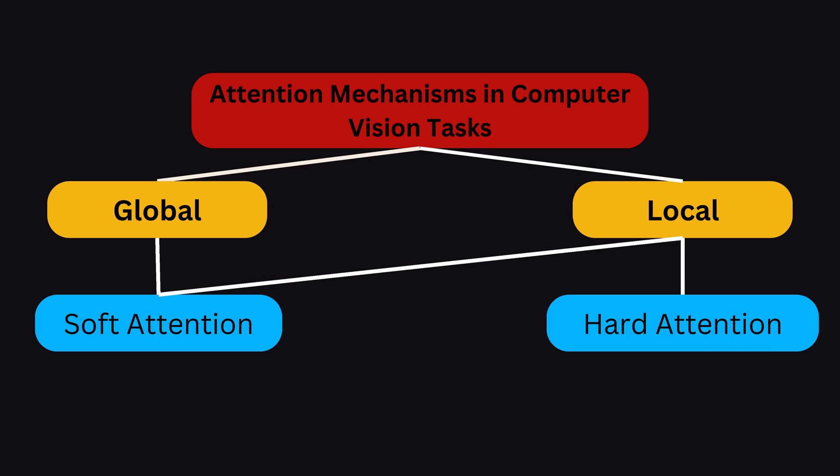Another commonly used categorization in computer vision tasks and geospatial data processing is the distinction between global and local attention. Global attention, akin to soft attention, involves considering all input elements, but simplifies the soft attention process by using the output of the current time step rather than the prior one. Local attention represents a hybrid approach, combining elements of both soft and hard attention, considering a subset of input elements at a time — addressing the limitation of hard attention, which is non-differentiable, while being less computationally expensive.